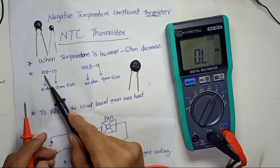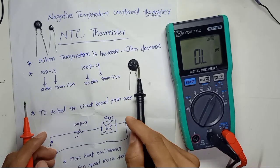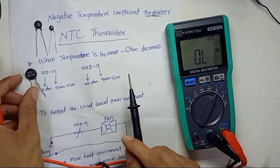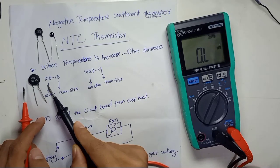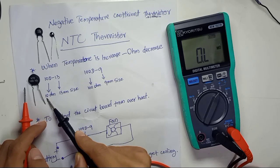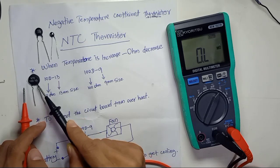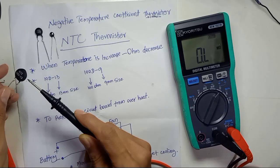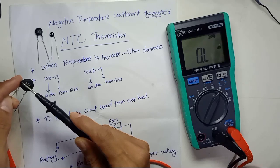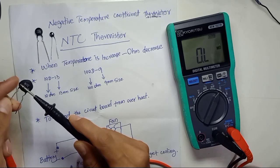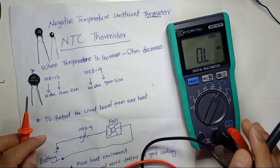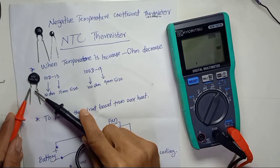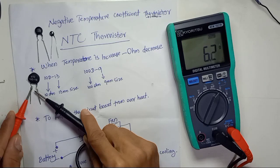With a thermistor the difference is: when the temperature increases, the resistance decreases. Here I have the 10D-13 thermistor. The '10' means 10 ohms resistance and '13' means the diameter is 13 mm.